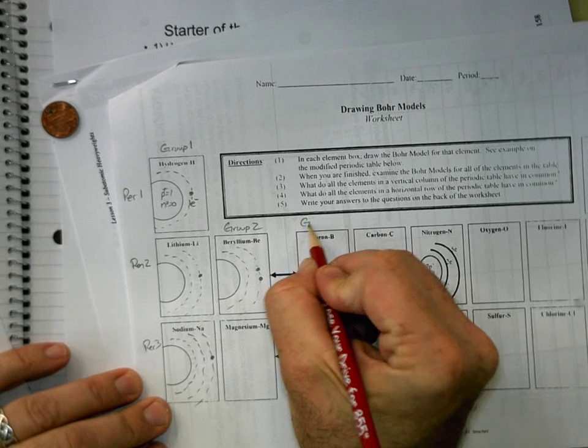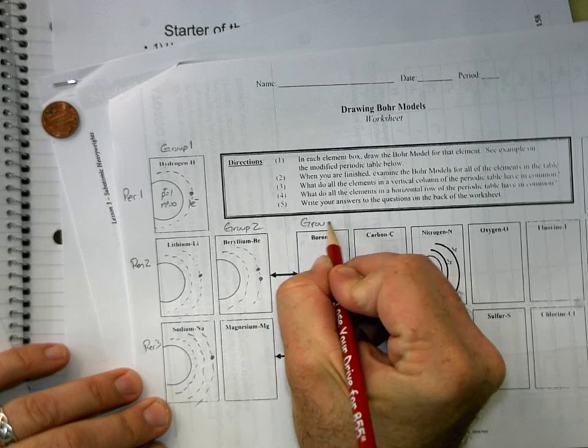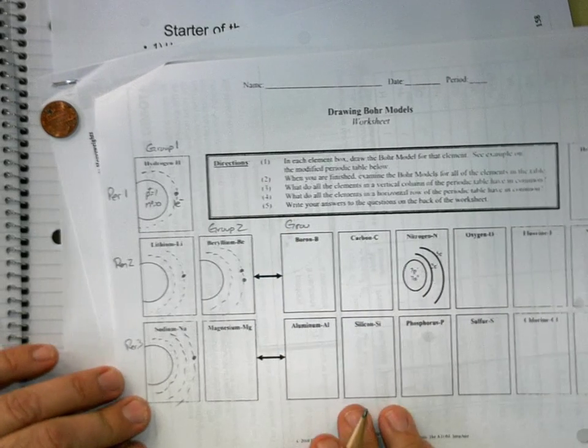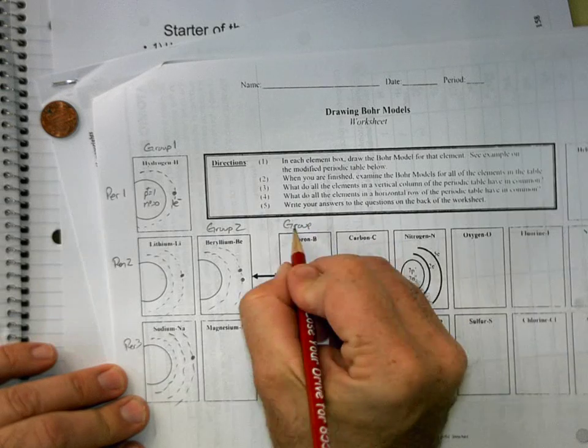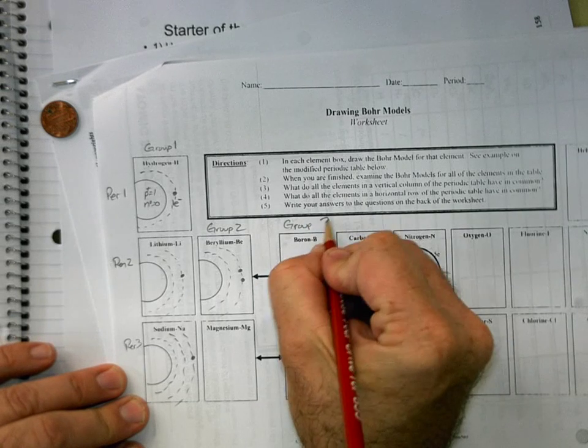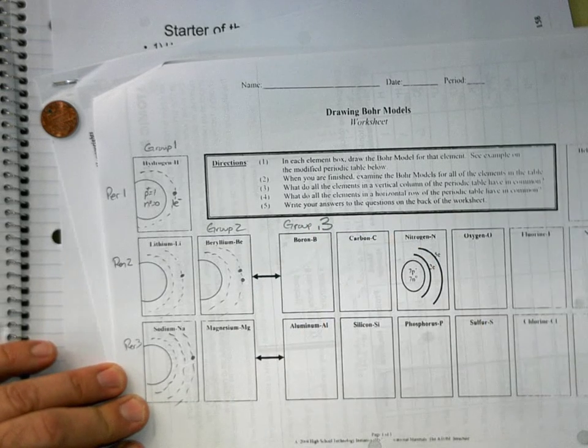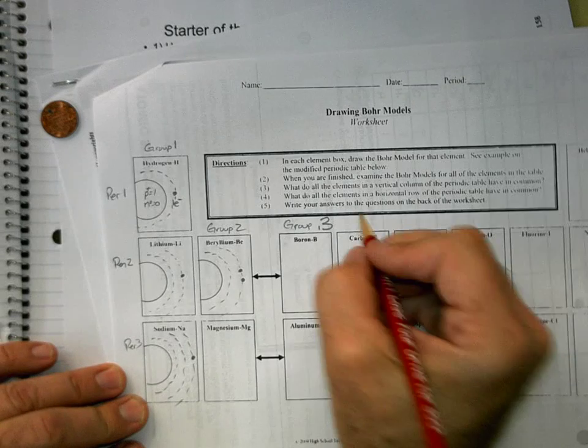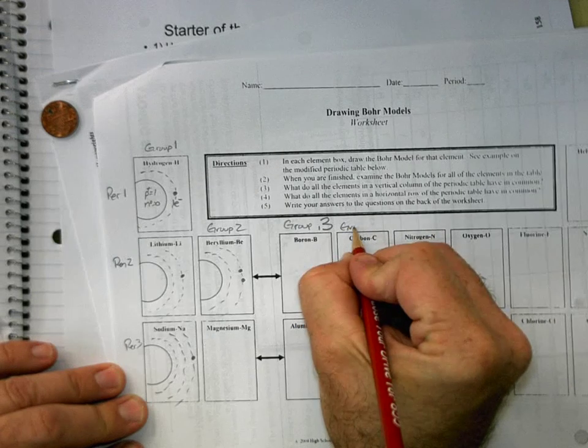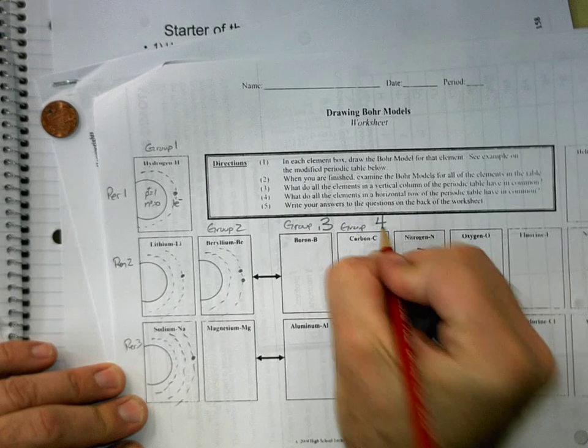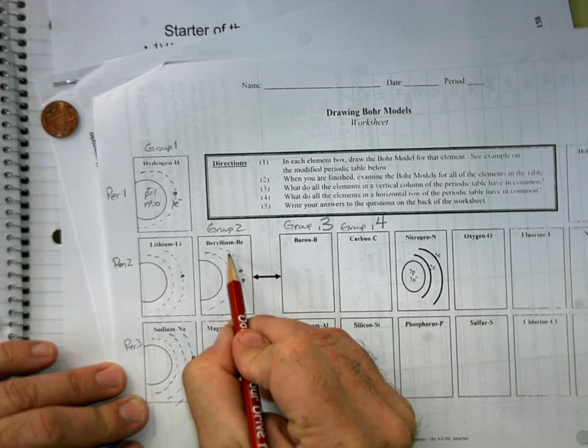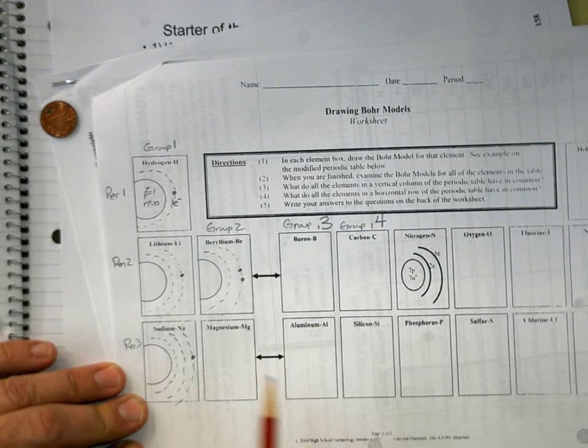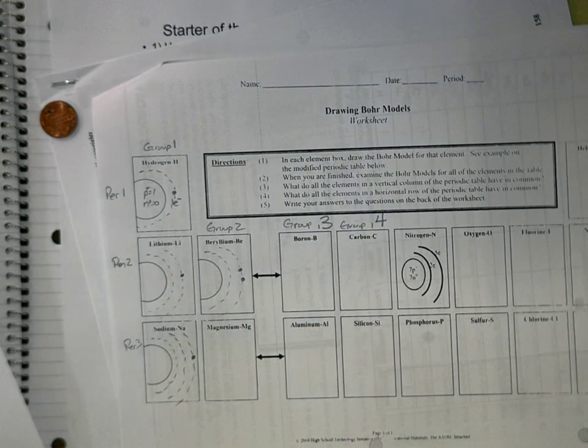And let's finish labeling these. Now, we're jumping across the transition metals there. So now we're over here at group thirteen. I'm exaggerating the size of the second number because on each of these, I wanted to exaggerate that that's how many valence electrons they have. That means the number of electrons in their outer shell. So let me stop this recording now.